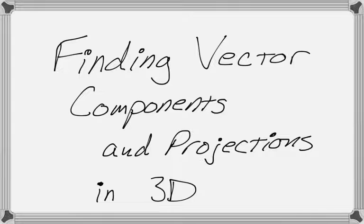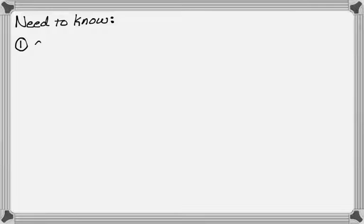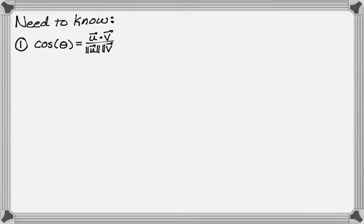In this video we are going to find vector components and projections in three dimensions. Before we get into that, there are two things you need to know. The first one is that the cosine of theta, where theta is the angle between two vectors, is u dot v over the magnitude of u times the magnitude of v. I'm assuming you know how to find dot products and magnitudes, because if you're up to this point, you've probably used them quite a bit.